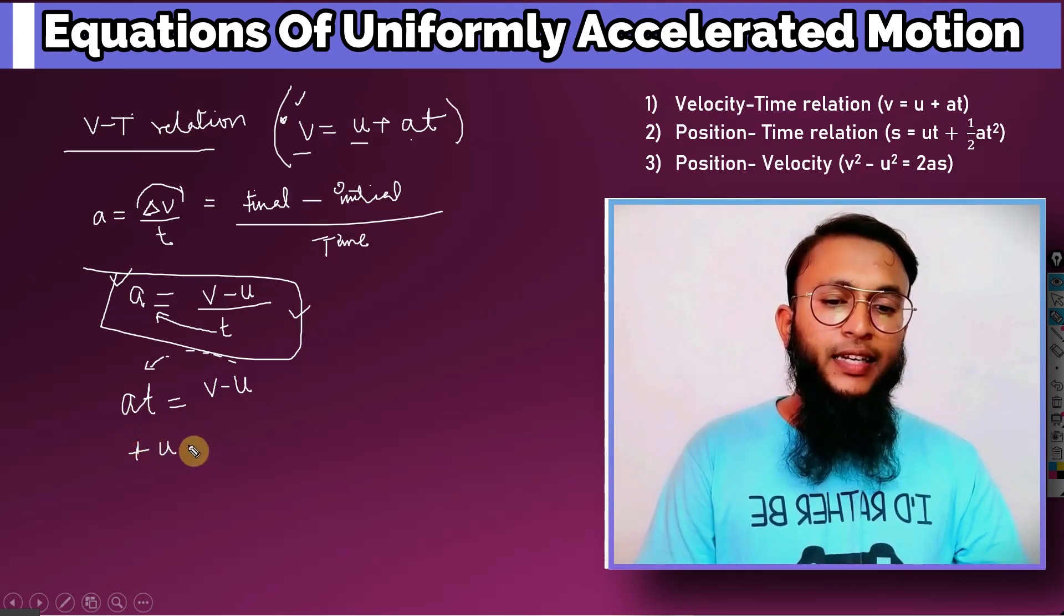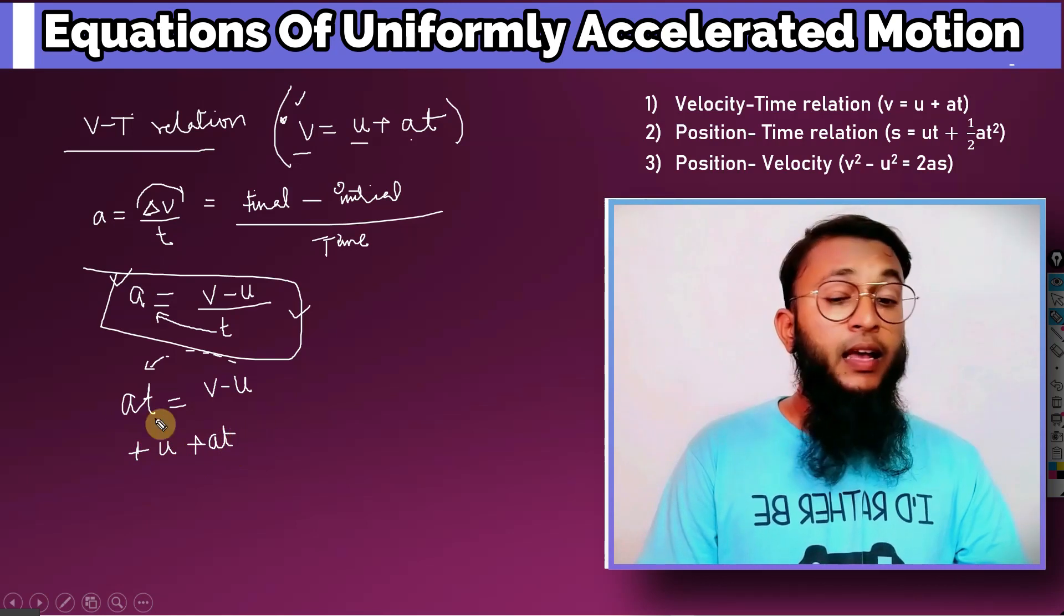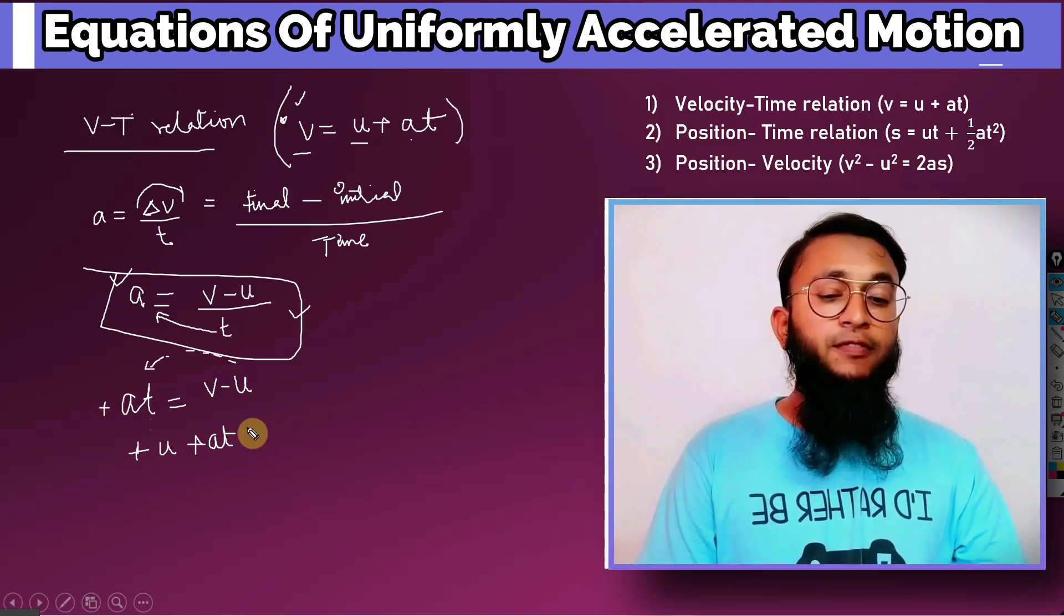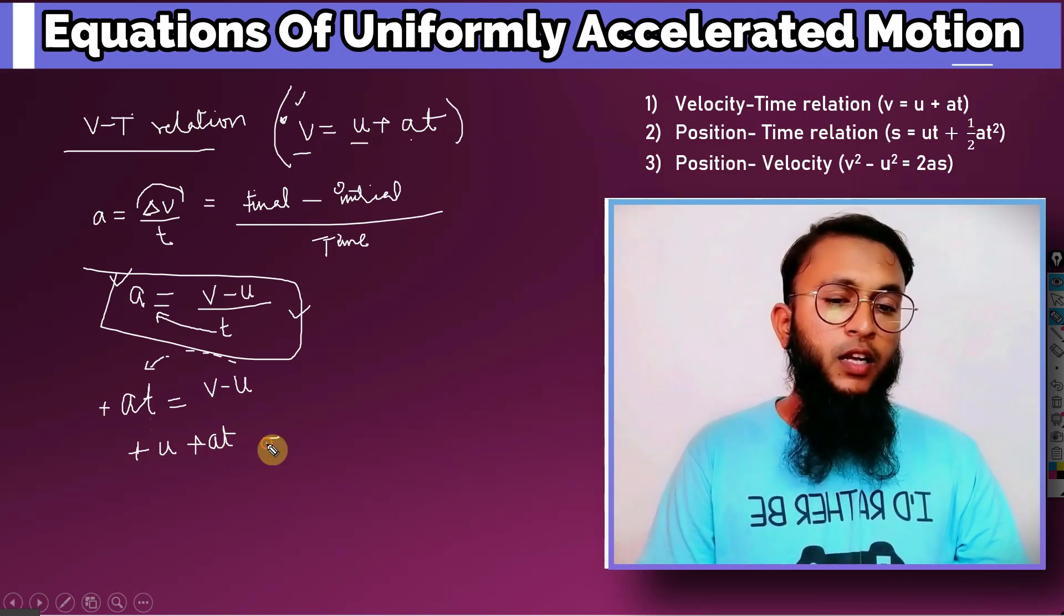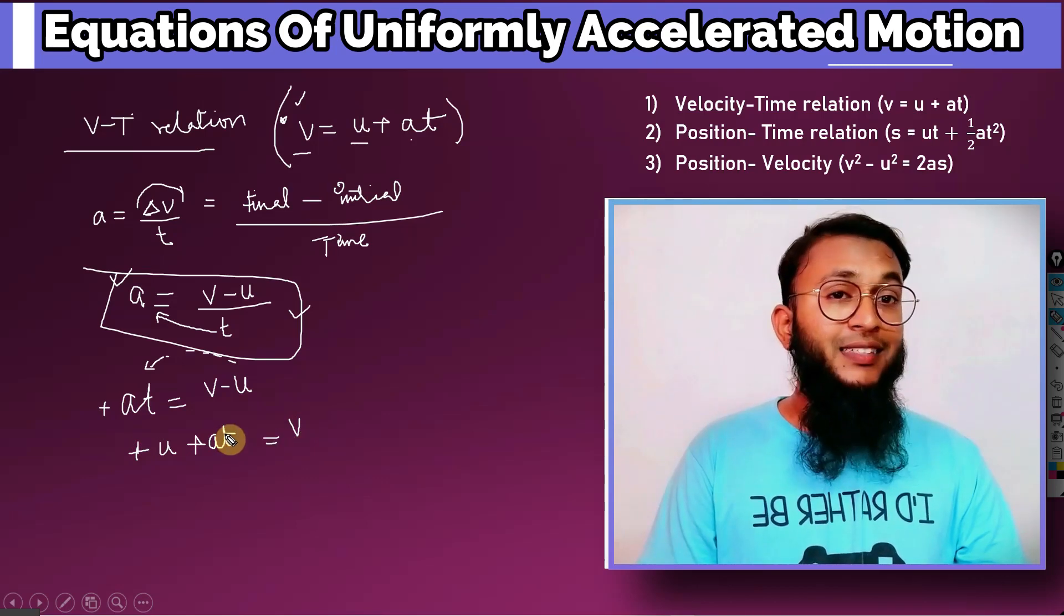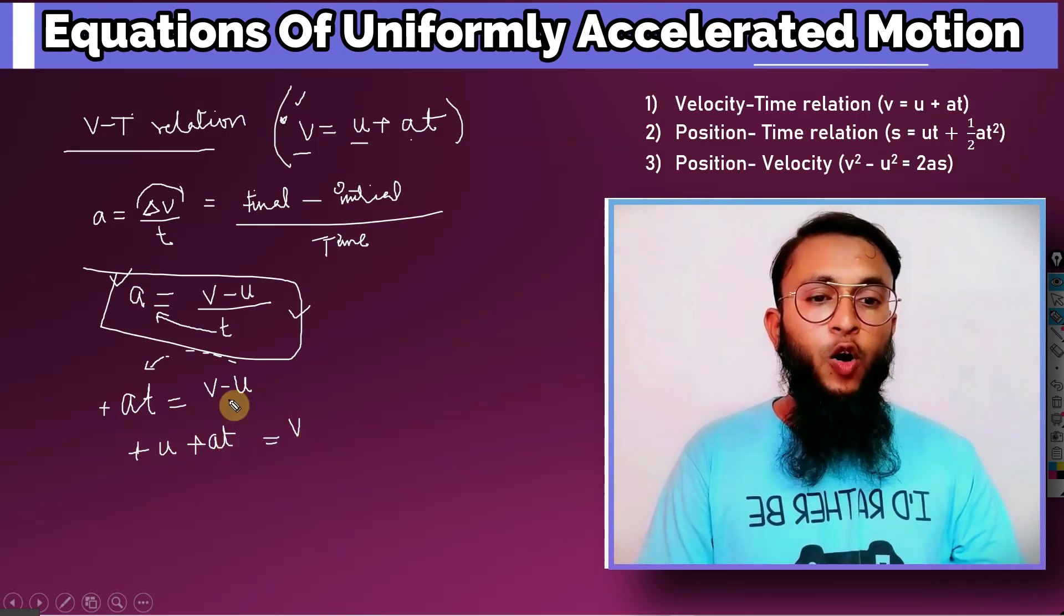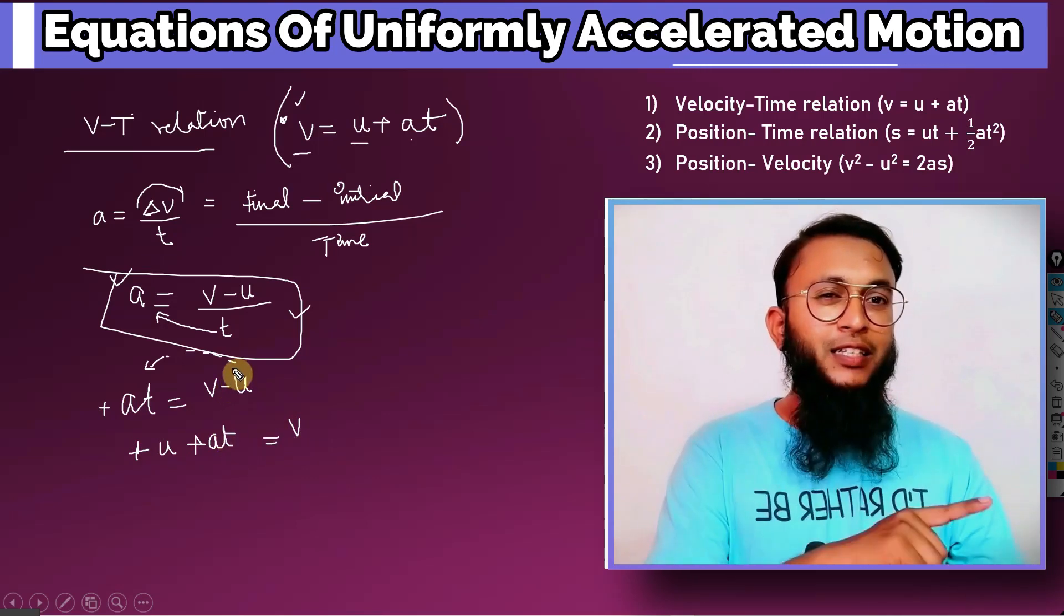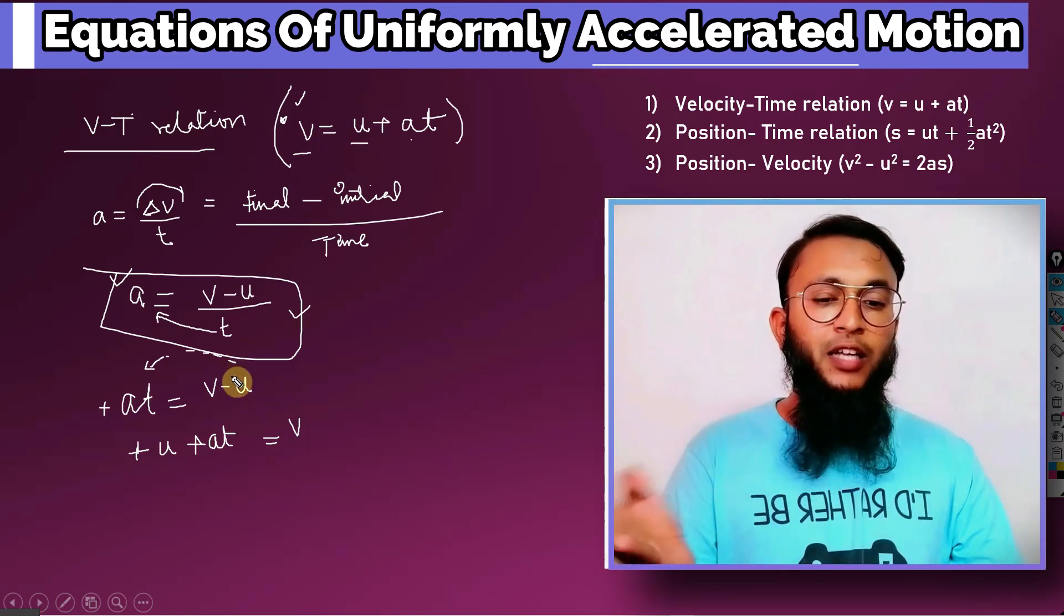And what was already there here? At. What was already there here? At was not having any sign. If there is no sign, you should consider plus. So what is available at the right hand side? Which is v and nothing else. U gone that side. So now we wanted v to be at the other side and all the rest of the terms at the other side. We got the equation easy.